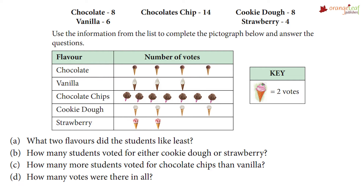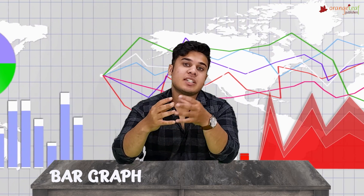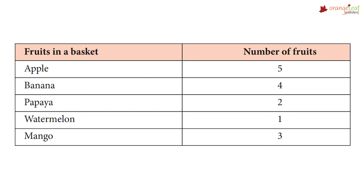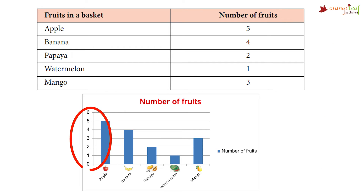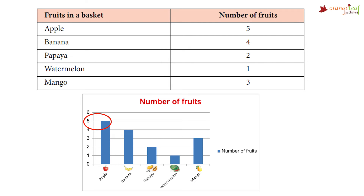How many votes were there in all? The total amount of votes is 40. Bar graph: a bar graph represents information using bars that are standing on the same base. Have a look at this table telling about the fruits in a basket and the number of fruits. The left side of the bar graph shows the numbers and the base shows the names of the fruits. We have five apples, four bananas, two papayas, one watermelon, and three mangoes.